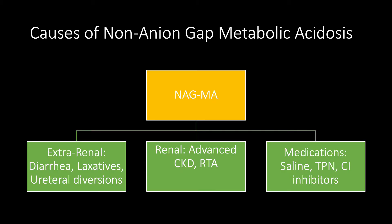Let's talk about the causes of non-anion gap metabolic acidosis. We have extra-renal causes such as diarrhea, use or abuse of laxatives, and urethral diversions. We have renal causes such as advanced chronic kidney disease — here you need estimated GFR below 20, so stages 4 and 5 chronic kidney disease — and a big category of renal tubular acidosis. You have certain medications like carbonic anhydrase inhibitors such as acetazolamide, topiramate, the use of total parenteral nutrition (TPN), and the use of saline, but it has to be large volume. So these are the main causes.